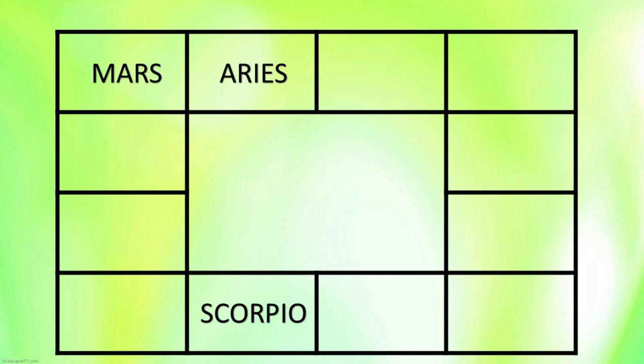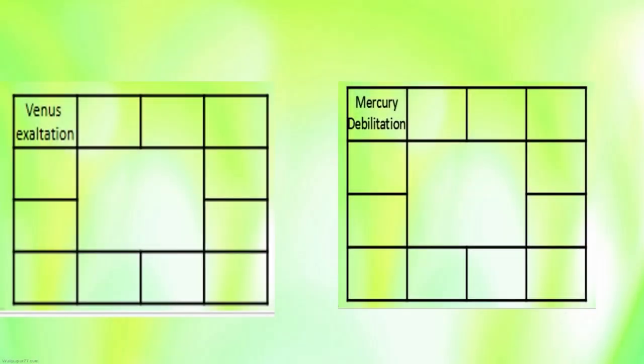Now let me explain about Mercury. Mercury gets debilitated in the house of Pisces, while Venus gets exalted in the house of Pisces. When Mercury gets debilitated in Pisces, it means intelligence becomes lessened. Mercury is a planet that signifies intelligence, humor, cleverness, and the ability to grasp things. Mercury gets debilitated in the twelfth house of the Kalapurusha. The reason is related to why a particular planet gets exalted and another gets debilitated in a given house.